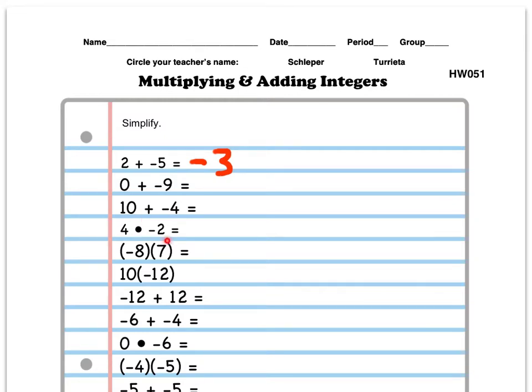So let's take a look at a multiplication one here. Here I have 4 times a negative 2. I know I have a positive times a negative. So I realize when I'm doing multiplication that that'll give me a negative. So then all I have to do is think about 4 times 2. Well, 4 times 2 is 8. So my answer should be negative 8.